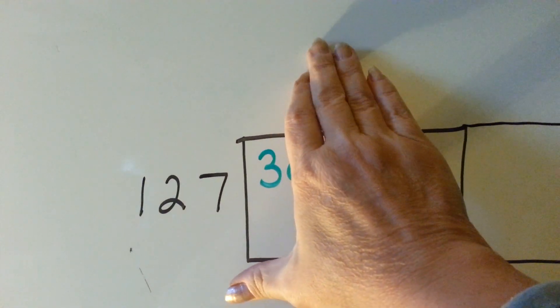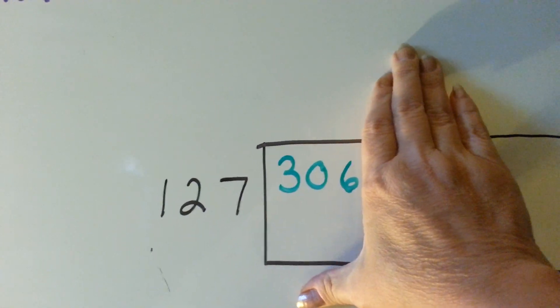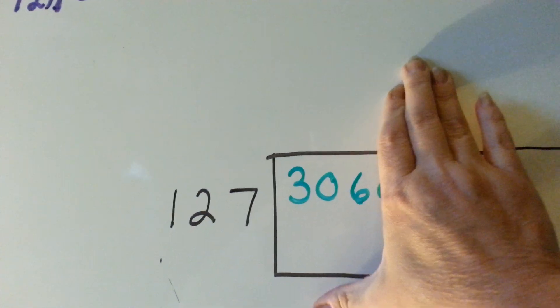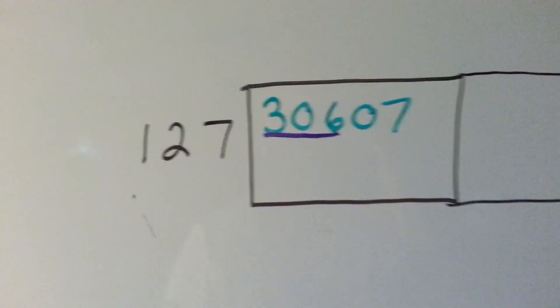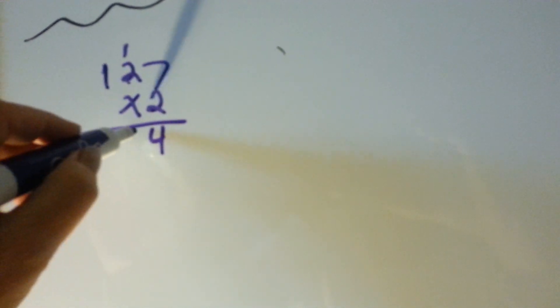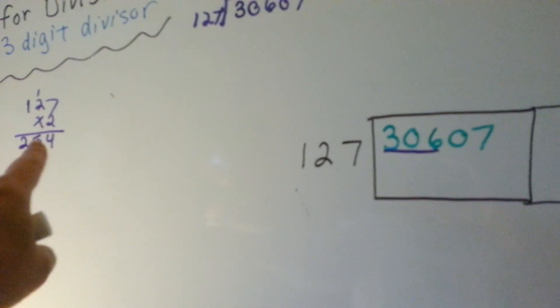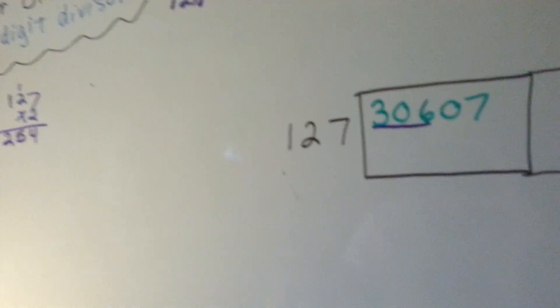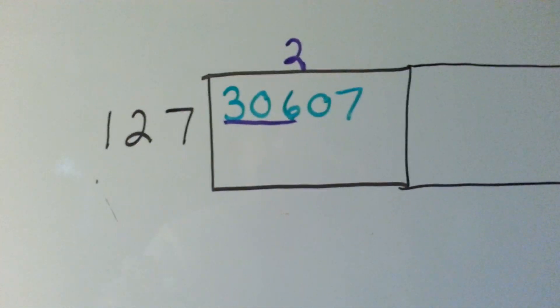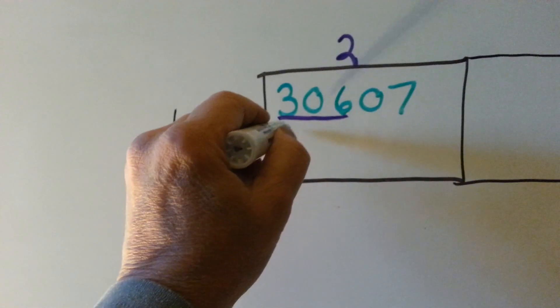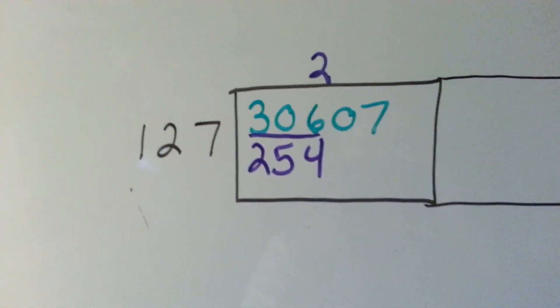So what we're going to ask ourselves is: can 127 go into 3? No. Can it go into 30? No. Can it go into 306? Yes it can, so that is going to be the number we put it into. How many times can 127 go into 306? Let's do some math on the side. 2 times 127: 2 times 7 is 14, 2 times 2 is 4 and one more is 5, so that's 254. Can we fit another 127 on top of that? No, so we'll go with 2. We put a 2 above the 6 because that's where we stopped at 306, and 127 times 2 is 254.